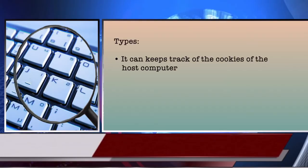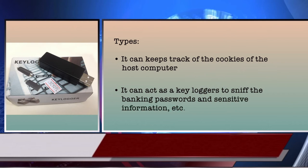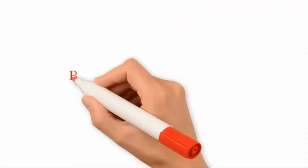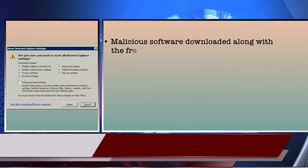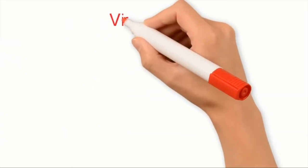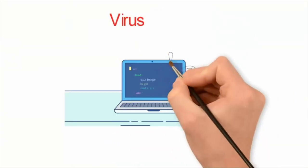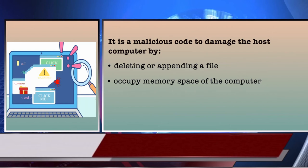Spyware may be of various types — it can keep track of the cookies of the host computer, or it can act as a keylogger to sniff banking passwords and sensitive information. The third variety of malware is browser hijacking software — malicious software downloaded along with free software from the internet and installed in the host computer without the user's knowledge. This software modifies the browser settings and redirects links to other unintentional sites. The next category of malware is virus — a virus is a malicious code written to damage the host computer by deleting or appending files, occupying memory space by replicating copies of the code, slowing down the performance of the computer, or formatting the host machine.